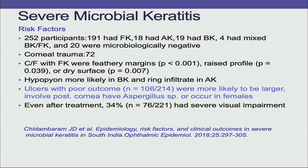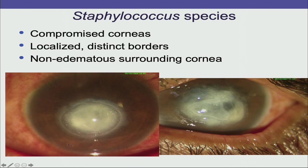Ulcers with poor outcome are more likely to be larger, involve the posterior cornea, have Aspergillus species, or occur in females. Clinically, at least 70% of the time you can pick up what the organism is. A punched-out lesion with clear margins and relatively clear surrounding cornea with non-edematous surrounding is most likely Staphylococcus.